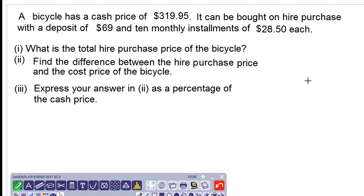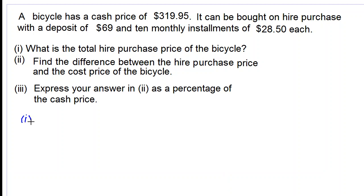Part 1: What is the total hire purchase price of the bicycle? Let's do part 1. We are finding the total of a deposit of $69 plus 10 monthly installments of $28.50 each. So 10 times $28.50.